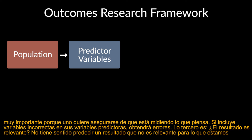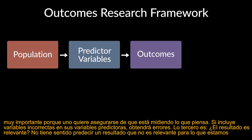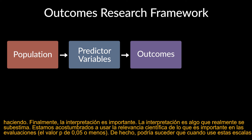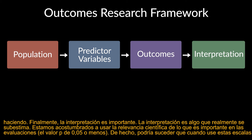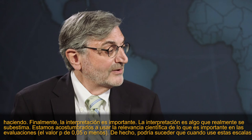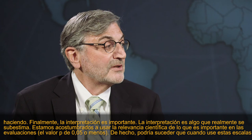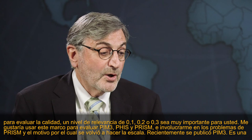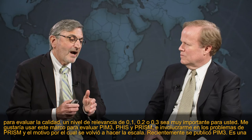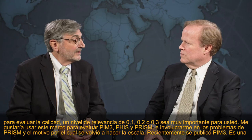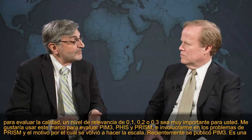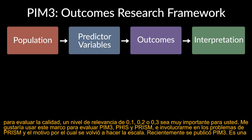We're used to using scientific significance with a p-value of 0.05 or less. In fact, when using these scores for assessing quality, a significance level of 0.1, 0.2, or 0.3 might be very important to you. I would like to use that framework to assess both PIM-3, PHIS, and PRISM, and get into the problems in PRISM and why we have redone the score.